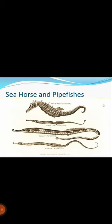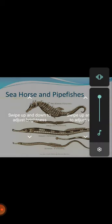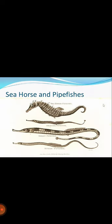In this slide you may see the sea horse and pipefish. The sea horse is the name given to 45 species of small marine fish in the genus Hippocampus — from the ancient Greek, with hippos meaning horse and kampos meaning sea monster. Having a head and neck suggestive of a horse, sea horses also feature segmented bony armor, an upright posture, and a curled prehensile tail. The male sea horse is equipped with a pouch on the ventral side of the tail; when mating, the female deposits up to 1500 eggs in the male's pouch. The male carries the eggs for 9 to 45 days until the sea horses emerge fully developed but very small, after which the male often mates again within hours or days during the breeding season.